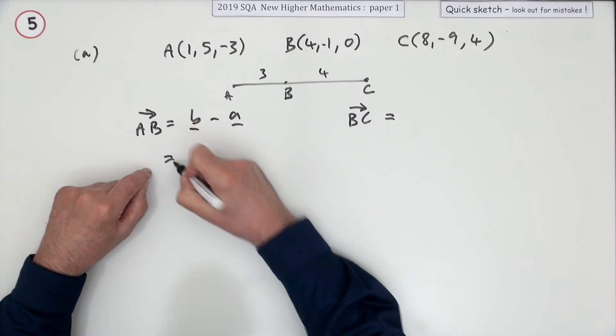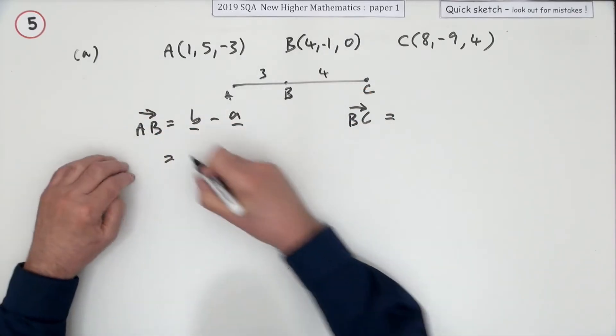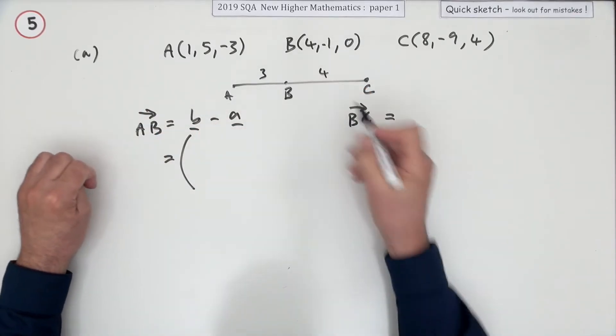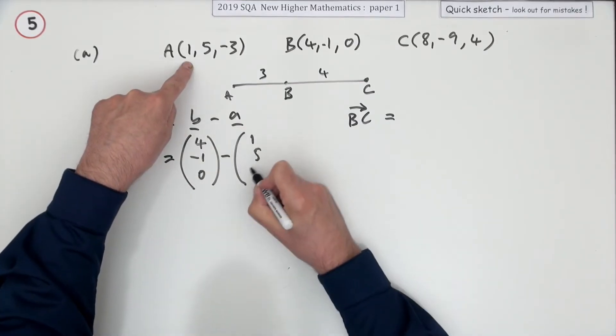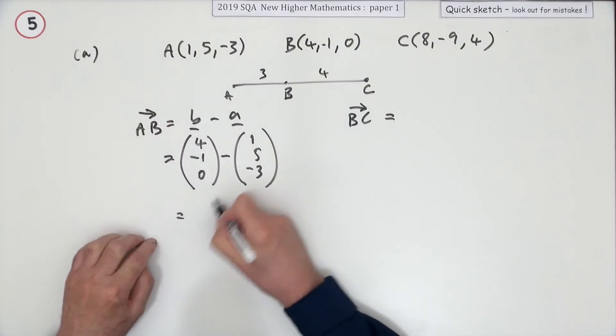Well, that's going to be B minus A. It's possible to just look at the numbers and put the answer down straight away, but I'll plod through it. Four, negative one, zero, and A is one, five, negative three. So going from A to B is three, negative six, three.